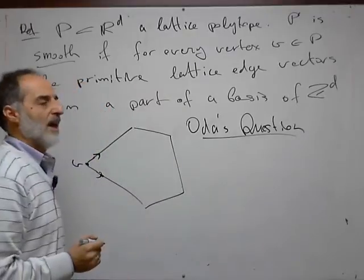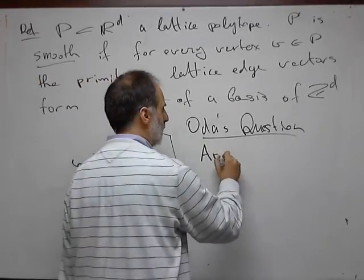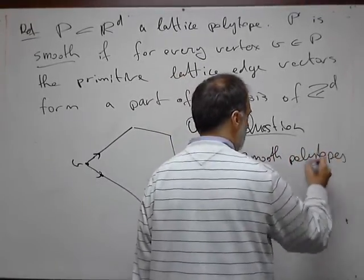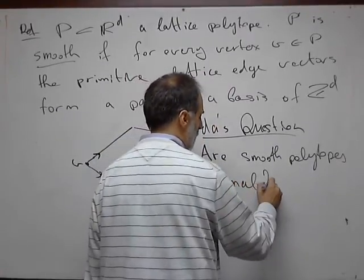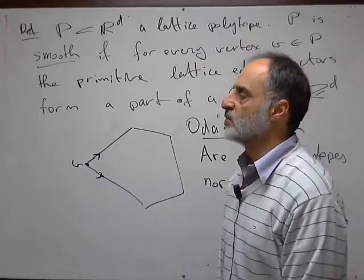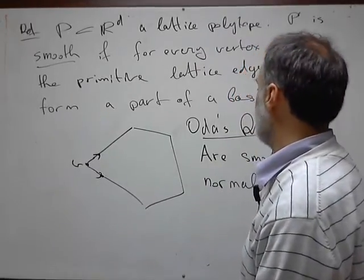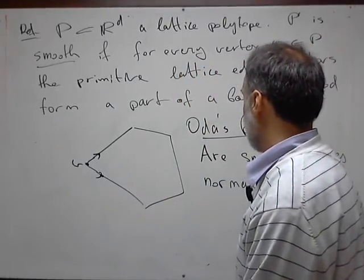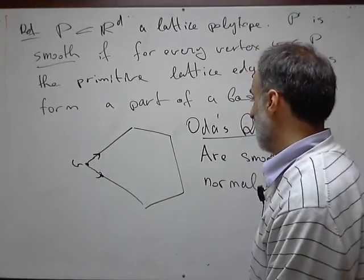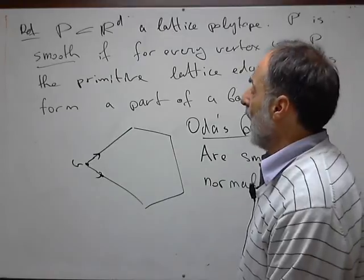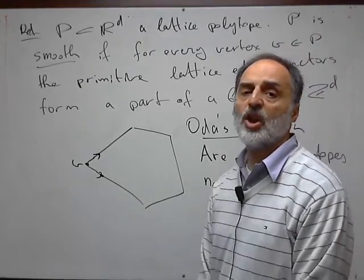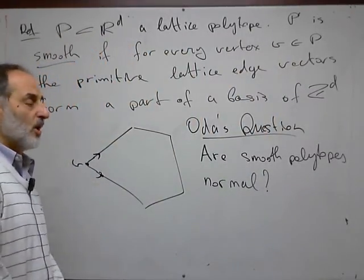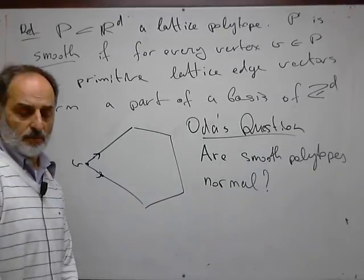The Odo question is whether smooth implies normal. Of course, the terminology—smooth, normal, integrally closed—comes from toric algebraic geometry, which I'm going to explain in one of the lectures to provide algebraic context. But next, in the next lecture, I will describe some previous attempts to characterize normality in simpler conditions. All these attempts fail, but the counterexamples that emerged have led to interesting developments in the theory. Let's end the first lecture.